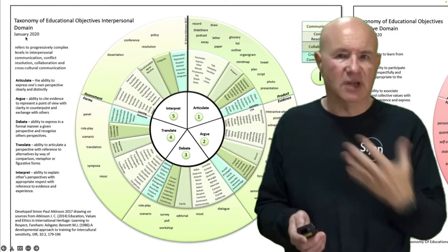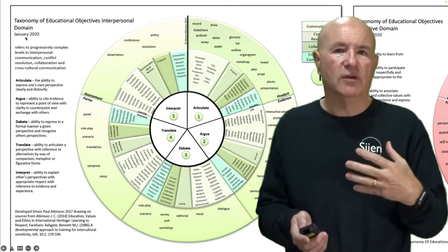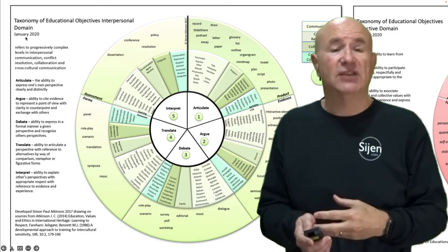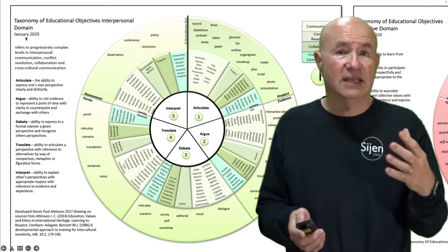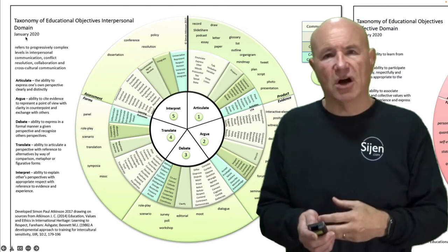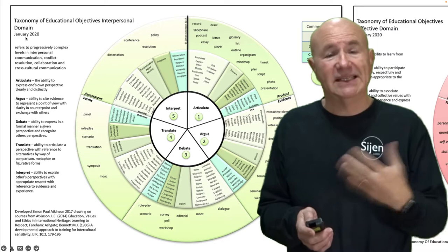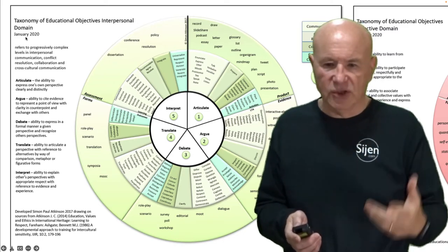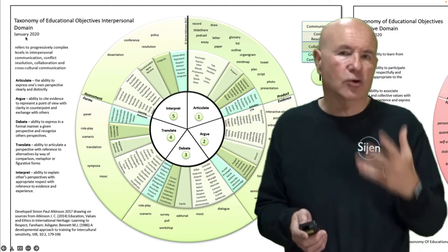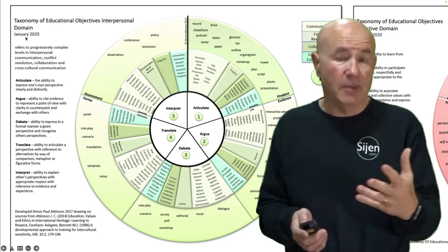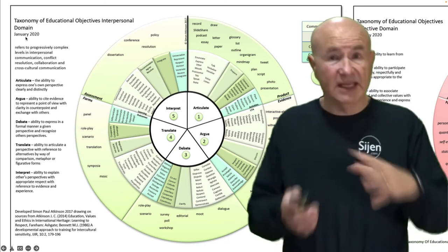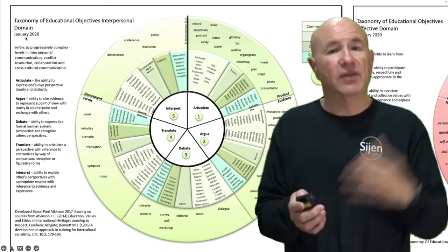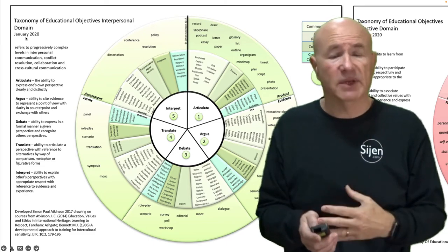The last of the five is an interpersonal domain. This is an original version that I've derived based on the work of my wife, Dr. Jeanette Atkinson, and a chap called Bennett. It is a whole series of levels designed to elicit different types of interpersonal skills — communication, conflict resolution, collaboration, and cross-cultural abilities. It looks a little more dense, but it follows exactly the same pattern and has five levels within this taxonomy as well.